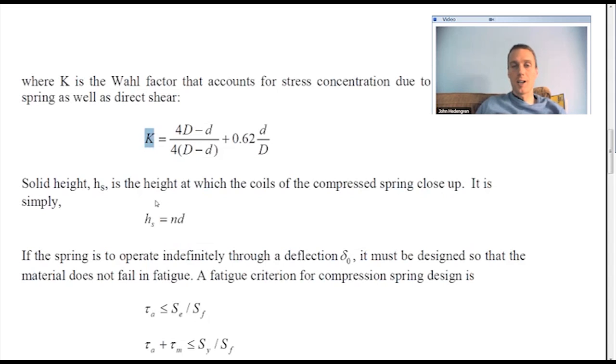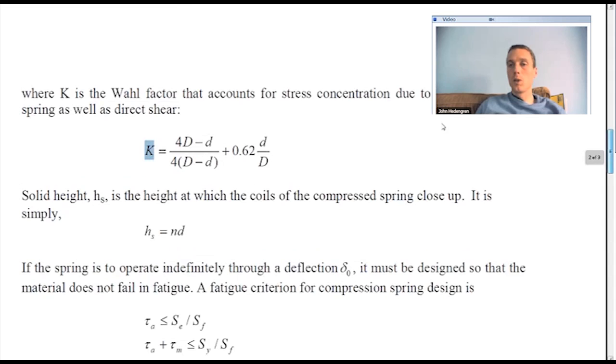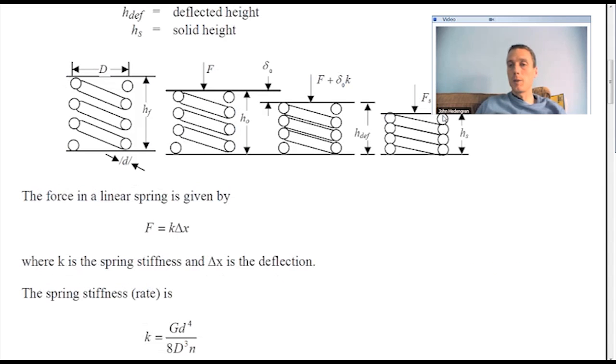So the solid height, this one's just very straightforward. This is just the number of coils that you have times the diameter of your spring. So if you go back up to the top, it's just counting the number of coils times the diameter of the spring, and that's your HS or your solid height.